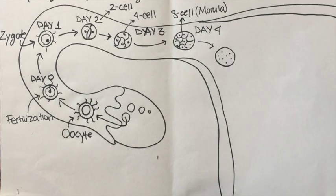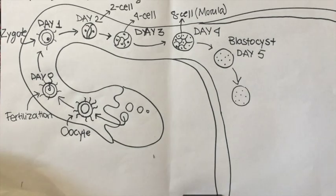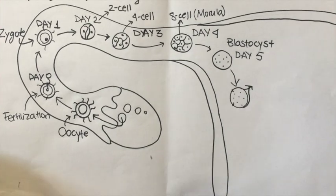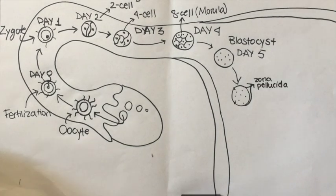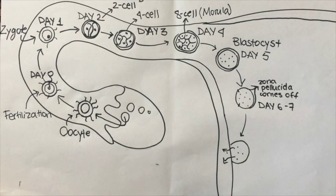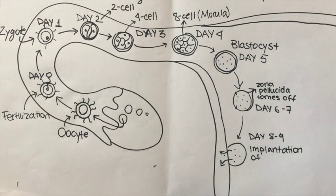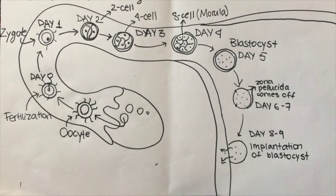On day five it is now called a blastocyst. On day six and seven, the zona pellucida of the blastocyst comes off, and on day eight and nine the implantation of the blastocyst into the endometrium, which is the uterus lining, begins.